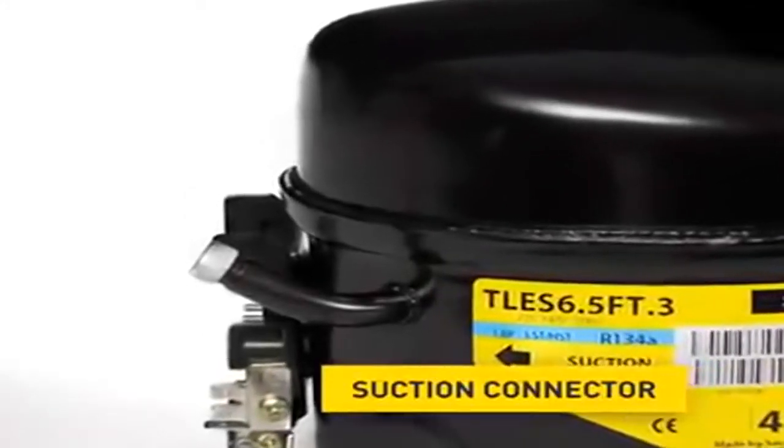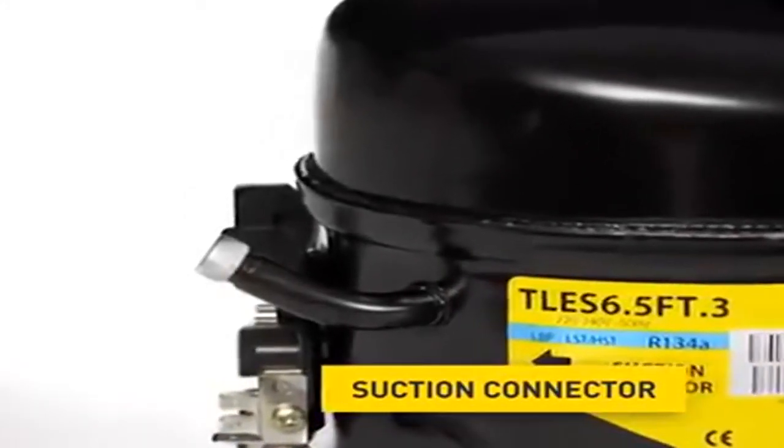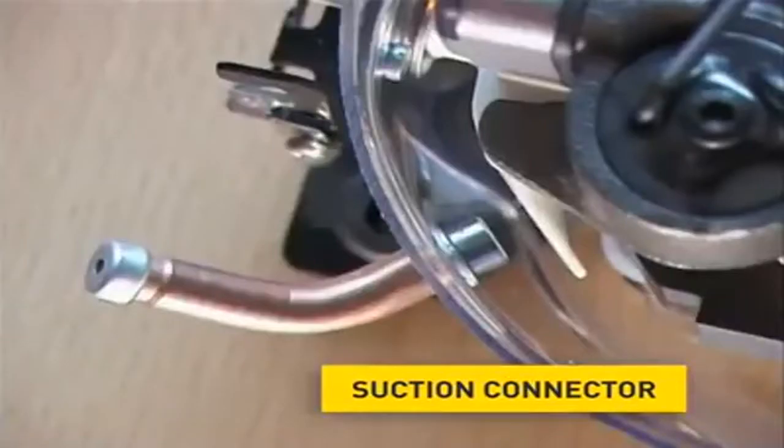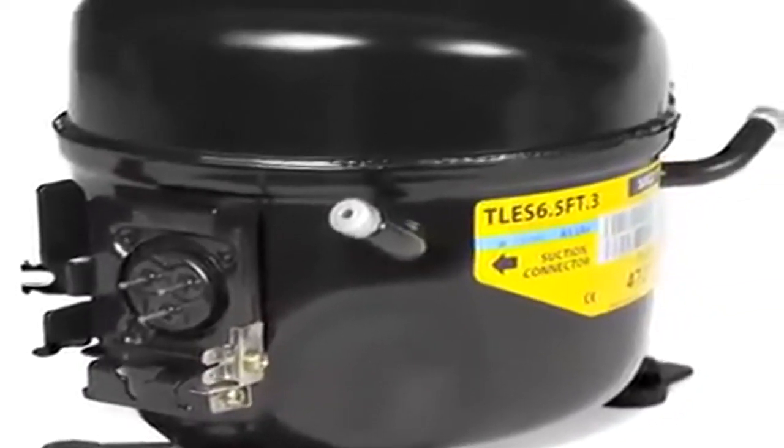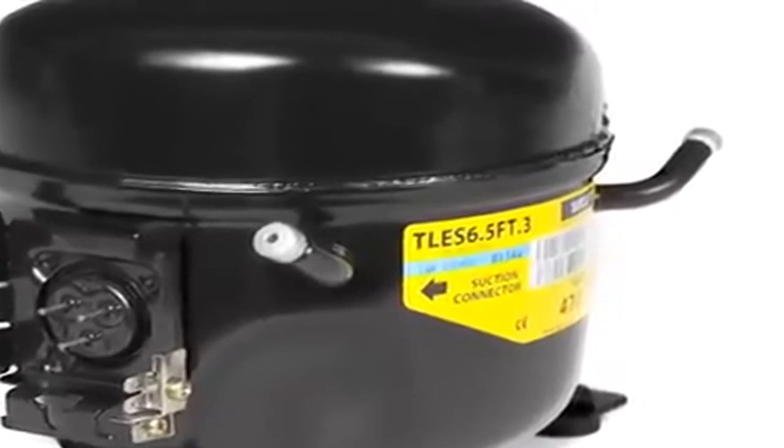The Suction Connector. It's connected with the refrigerating circuit of the respective appliance. Coming from the evaporator, the refrigerant is sucked in through the suction connector. At this compressor, the process and the discharge connector are on the opposite side.